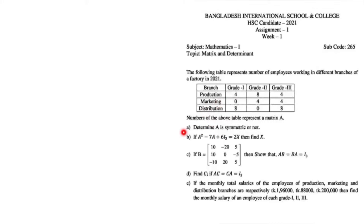So x represents the salary of a Grade 1 employee, y the Grade 2 salary, and z the Grade 3 salary. These are the amounts in taka that employees of each grade are earning per month. Hope all of you understood the questions and answers clearly.